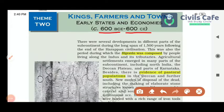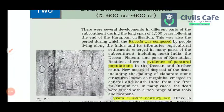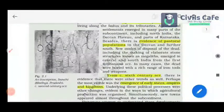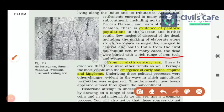There were several developments in different parts of the subcontinent during the long span of 1500 years following the end of the Harappan civilization. The early Vedic age started around 1500 BCE. In this gap, the Rig Veda was composed, and we can see evidence of pastoral population in the Deccan and further south. Then the expansion of agriculture happened, and the use of iron came into existence — that was an important technological change. Before that was the Bronze Age; now the Iron Age of Indian history emerged.